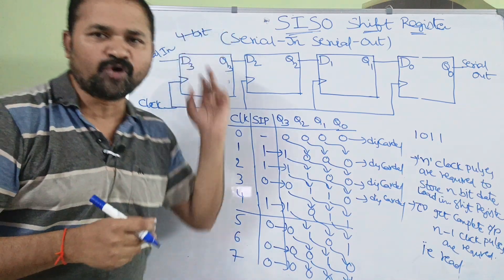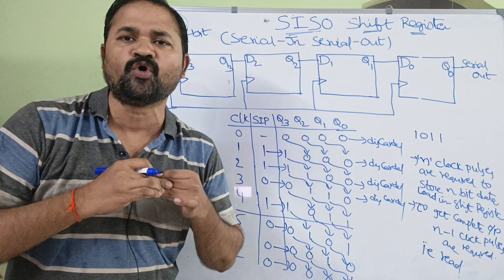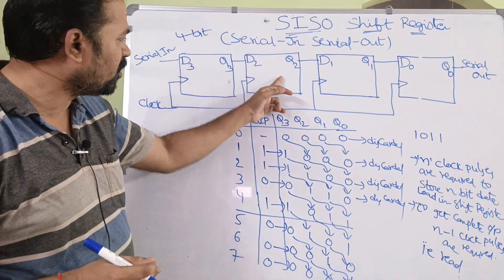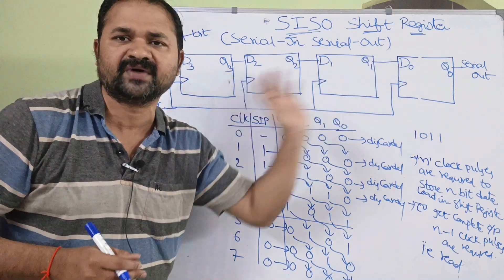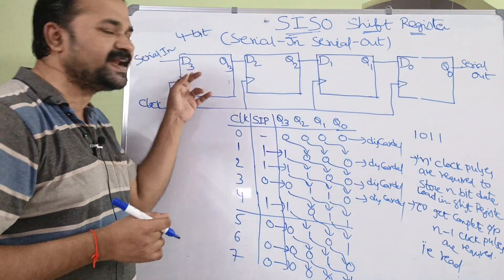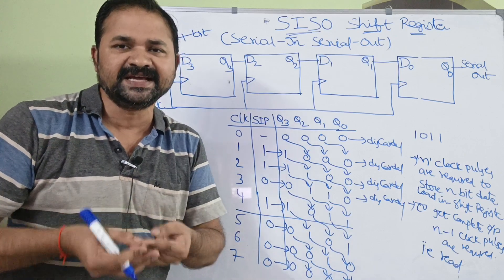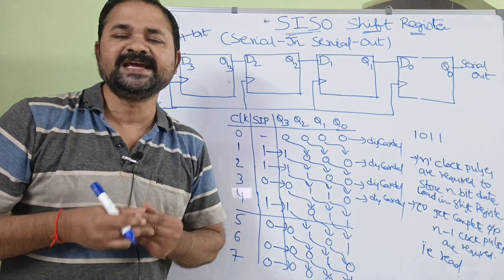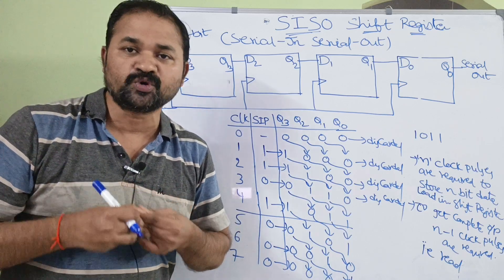Here it is a 4-bit register, so we will have 4 flip-flops: 1st flip-flop, 2nd flip-flop, 3rd one, 4th one. We have 4 flip-flops and here we have taken D flip-flop. D stands for data, and D flip-flop is mainly useful for storing the data.